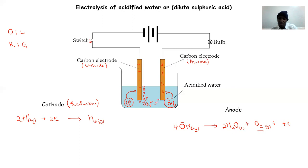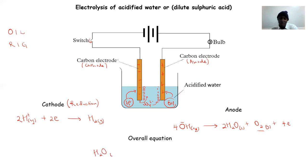Oxygen gas will also be seen as bubbles escaping at our anode. Combining the two equations at the cathode and anode — considering the four electrons lost by the hydroxide ions are gained by the hydrogen ions at the cathode — our overall equation shows that water breaks down to form hydrogen gas at the cathode and oxygen gas at the anode. Balancing the equation shows the ratio of hydrogen to oxygen produced is two to one in terms of volume.